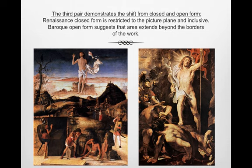The third pair demonstrates the shift from closed to open form. Renaissance closed form is restricted to the picture plane and inclusive. Baroque opens form and suggests that areas extend beyond the borders of the work. In the closed form on the left, space in the painting seems restricted by the edge of the canvas — the objects within determine, define, and limit the overall scene. In the open form on the right, the painted space appears to stretch on infinitely beyond the limits of the canvas, as if the viewer could peek around behind the frame and find more imagery.